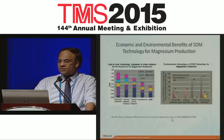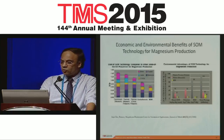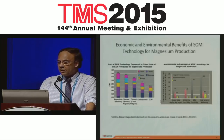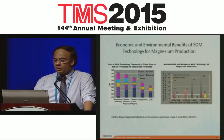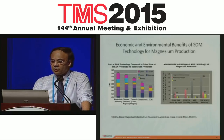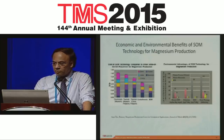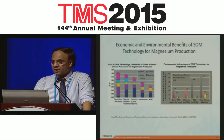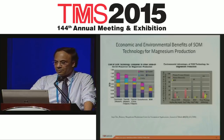Similar benefits can be seen on the environmental front. Looking at CO₂ evolution, chlorine evolution, sulfur dioxide, and energy consumption, the gray area corresponds to the metallothermic process, the pink to electrolysis, and the yellow to the solid oxide membrane process. The CO₂ generation, chlorine, sulfur dioxide, and energy consumption are significantly lower for the solid oxide membrane process.